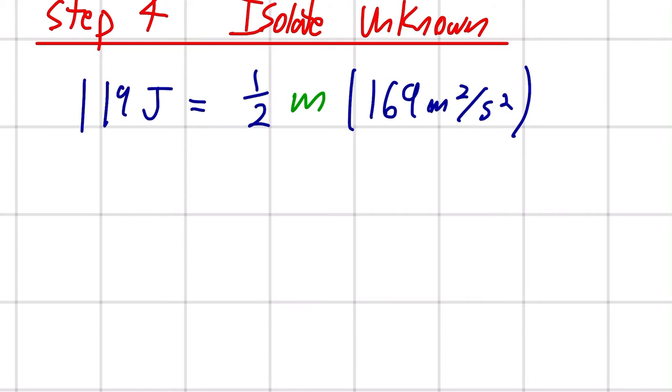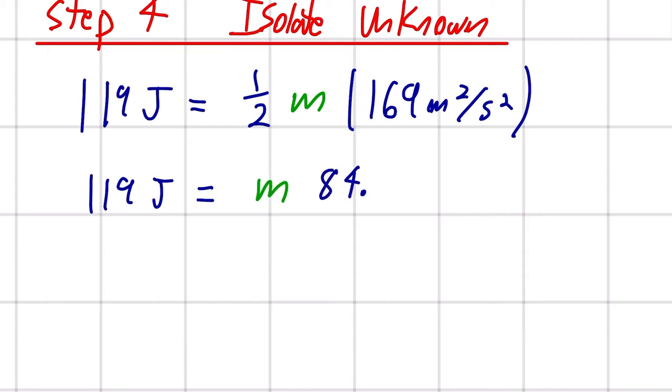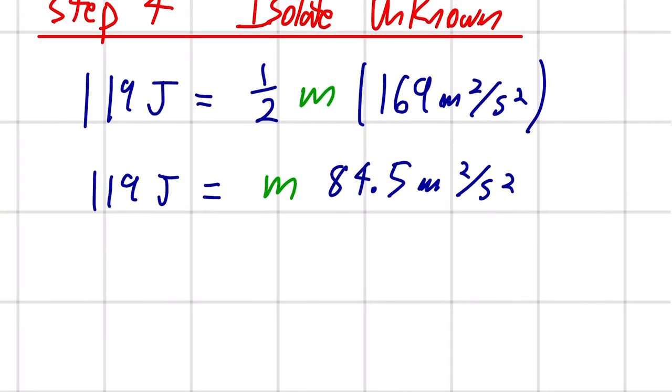And, following this, I'm going to rewrite and multiply these two terms together. So, we'll have that m times 84.5 meters squared per second squared. I've multiplied these two terms together.